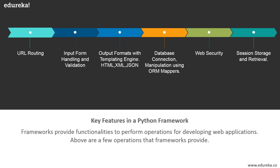An Object Relational Mapper, or ORM, is a code library that automates the transfer of data stored in a relational database table into objects commonly used in application code. We also have web security against cross-site request forgery (CSRF), SQL injection, cross-site scripting, and other common malicious attacks. The last operation is session storage and retrieval.